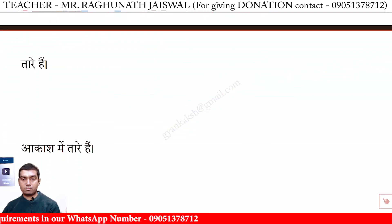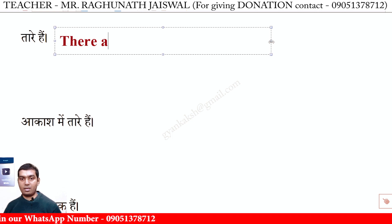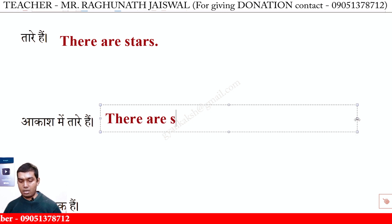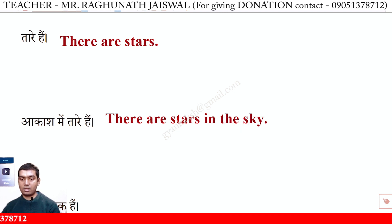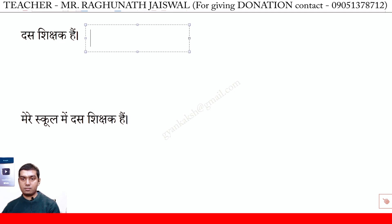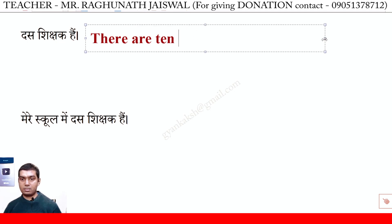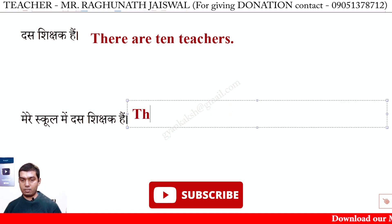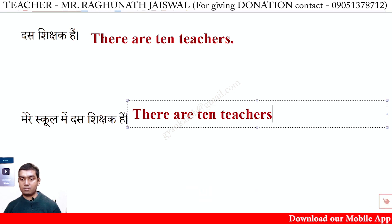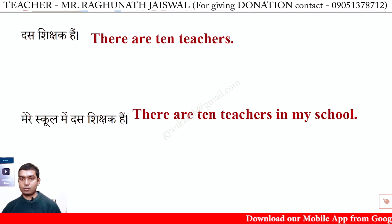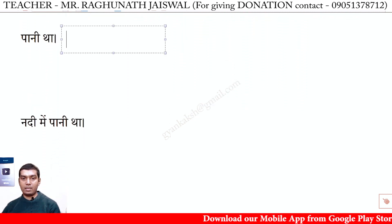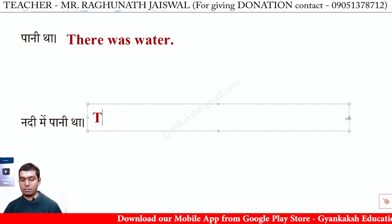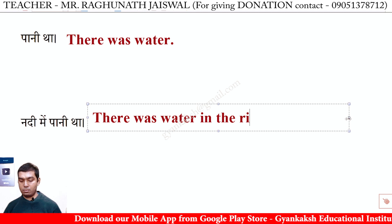Taare hai — There are stars. Aakash mein taare hai — There are stars in the sky. Desh shikshak hai — There are ten teachers. Mere school mein desh shikshak hai — There are ten teachers in my school. Paani tha — There was water. Nadhi mein paani tha — There was water in the river.